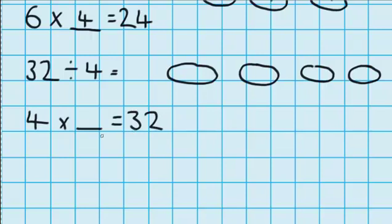Four times what is 32? Well, I know from my basic facts that four times eight is 32. So 32 counters shared between four groups must be eight. And we can check that by putting eight in each group, adding them up and seeing if we're correct. Eight plus eight is 16, plus another eight is 24, plus another eight is 32. So I've shared out the whole amount — four groups with eight in each group.